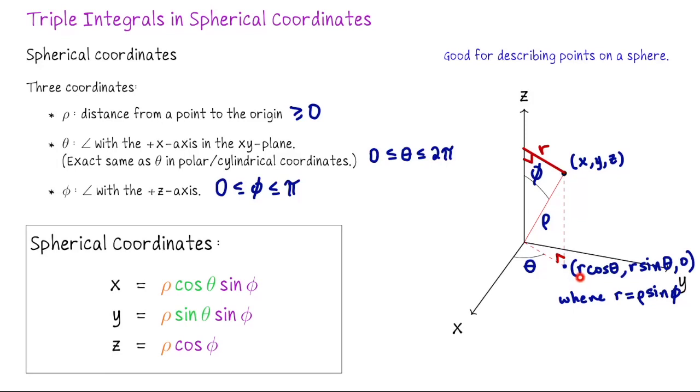So x would be ρ sin φ cos θ, or typically we order that ρ cos θ sin φ. Y is ρ sin θ sin φ. And if you look at this right triangle up here, this height is the z coordinate. Cosine of φ is adjacent over hypotenuse, so that's z over ρ, therefore z is ρ cos φ. So these are the spherical coordinates. It's a radius out from the origin and two angles.